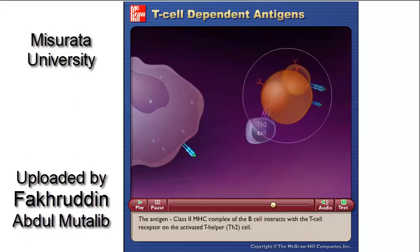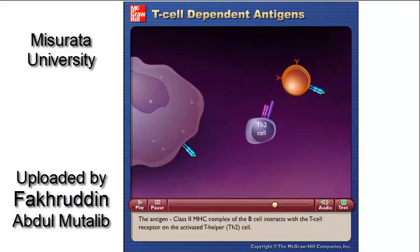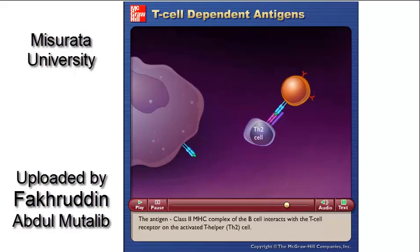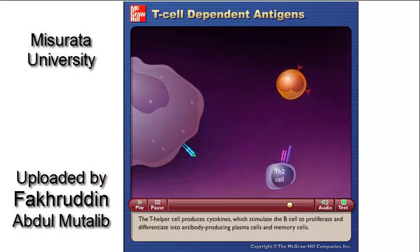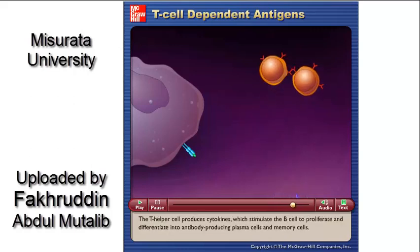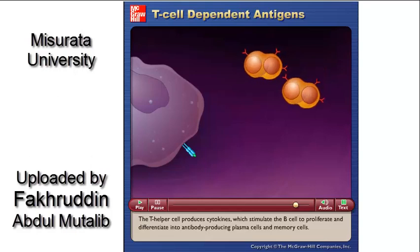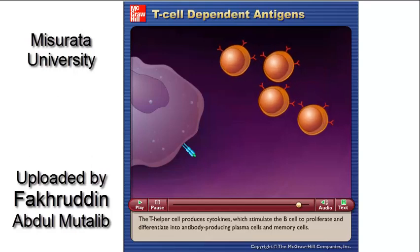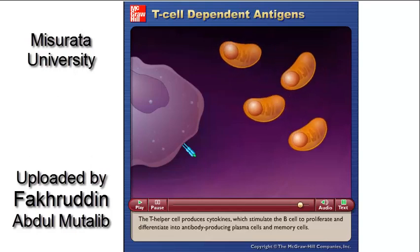The antigen-class II MHC complex of the B cell interacts with the T cell receptor on the activated T helper Th2 cell. The T helper cell produces cytokines, which stimulate the B cell to proliferate and differentiate into antibody-producing plasma cells and memory cells.